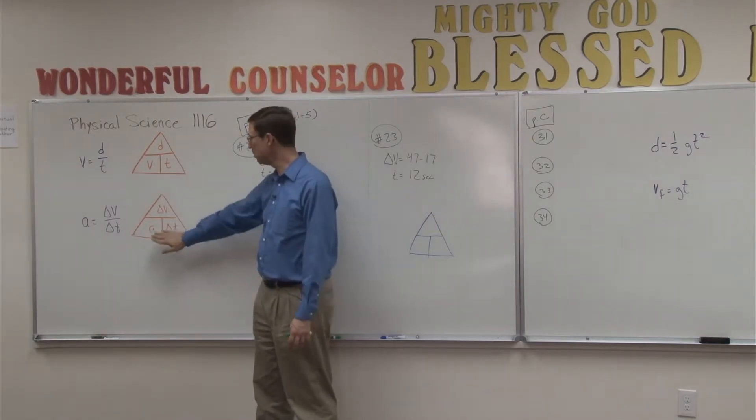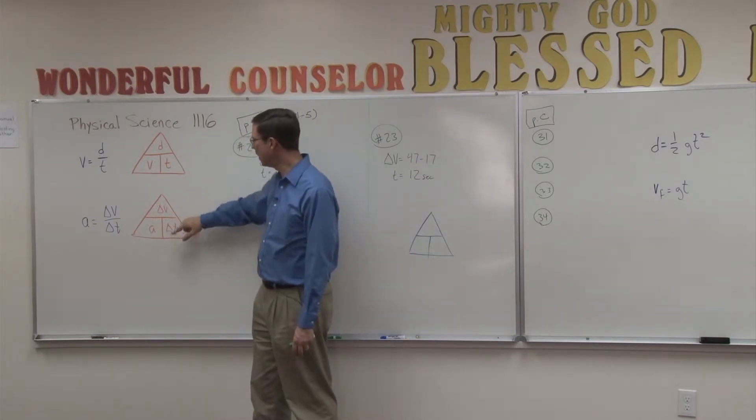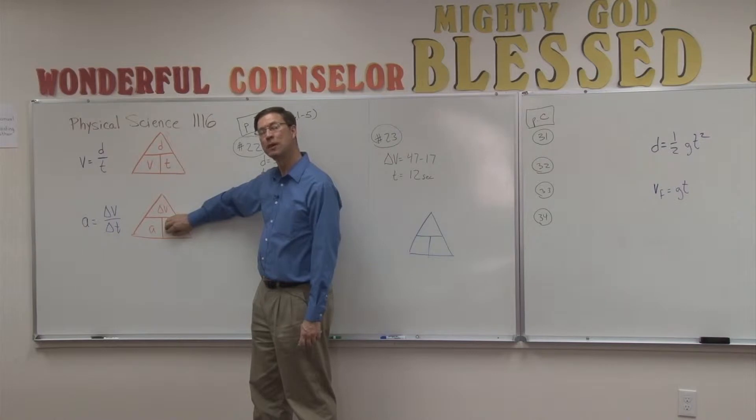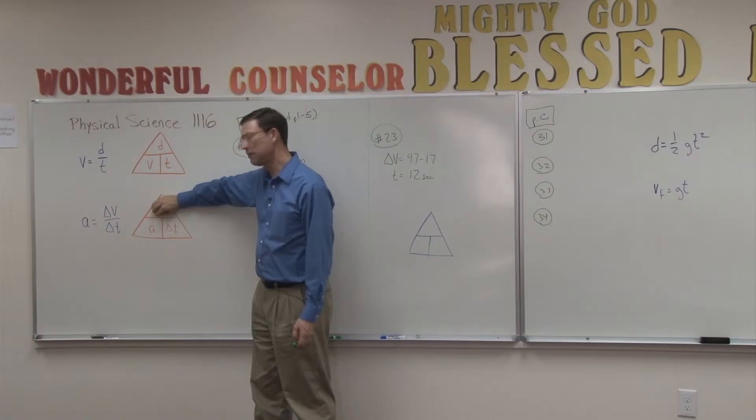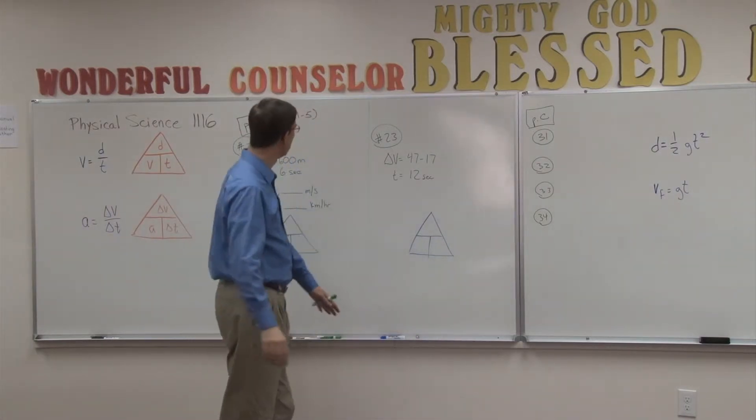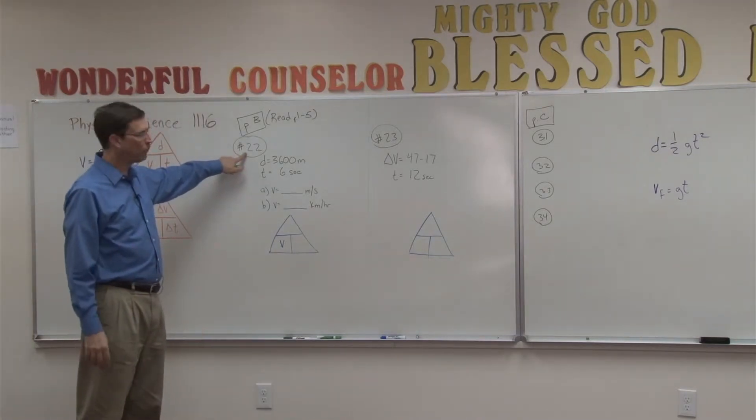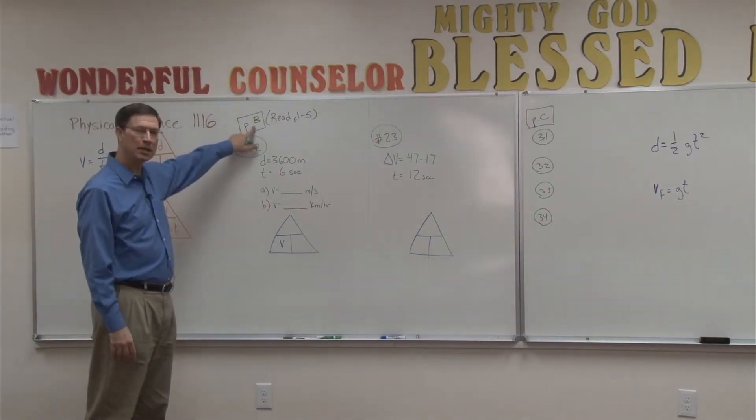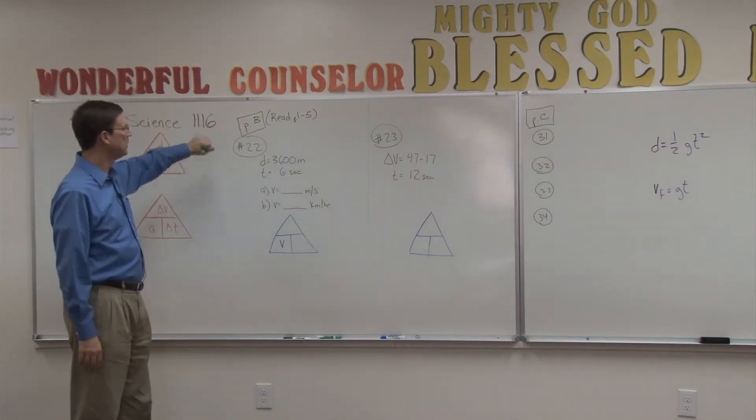So we could take change in velocity on the top, change in time on the bottom, and then that equals acceleration. So again, to find acceleration, cover that up, divide. If I wanted to find the time, I would cover that up, take the velocity and divide by acceleration. If I was solving for the change in velocity, I'd cover that up and multiply acceleration times time. So pretty easy to use. Let's apply it now to question 22 on page B in your activity pack for pace 116.